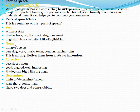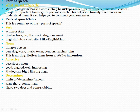Noun. Simply, what is a noun? We know it's the name of a person, place or thing. Or we can say everything created by God in this universe bears a name, and that name is a noun. Examples: pen, dog, work, music, town, London, teacher, John. 'This is my dog' — dog is a noun. 'He lives in my house' — house is a noun, the name of a place where you live. 'We live in London' — London is a noun.